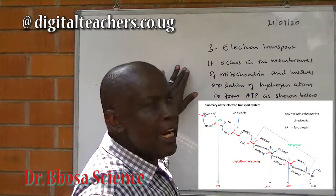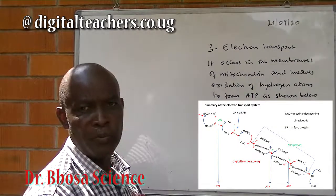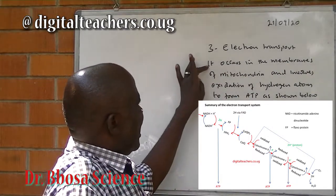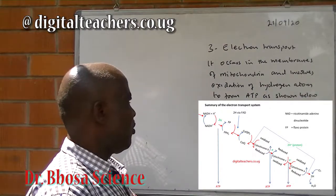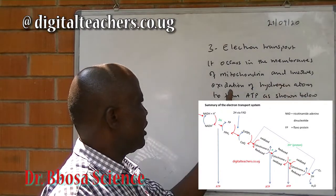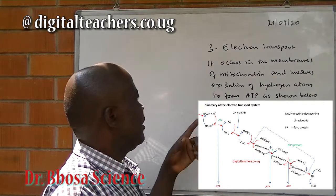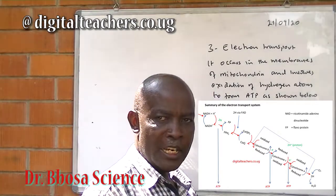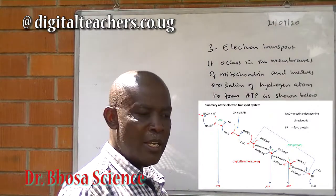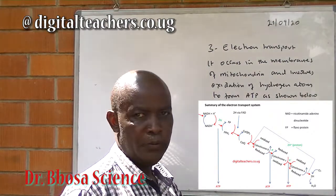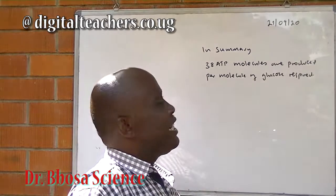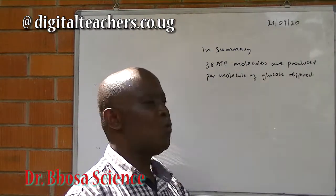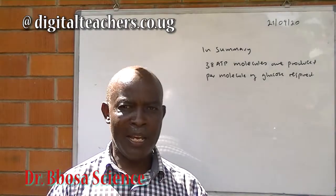The last stage of respiration is the electron transport chain. It occurs in the membrane of the mitochondria and involves oxidation of hydrogen atoms to form ATP, as shown in the summary of electron transport below. In the summary, thirty-eight ATP molecules are produced per molecule of glucose respired.